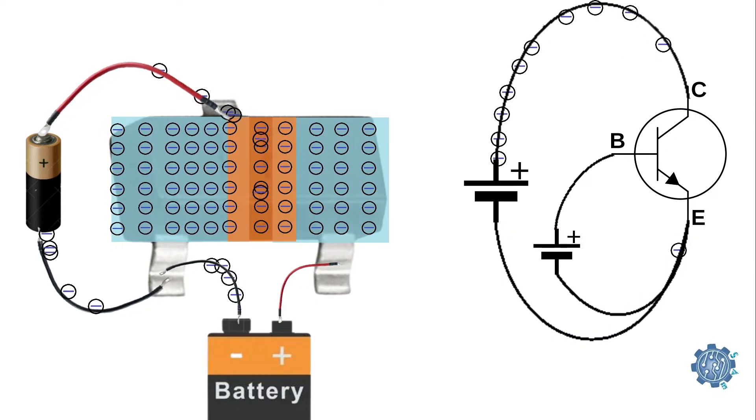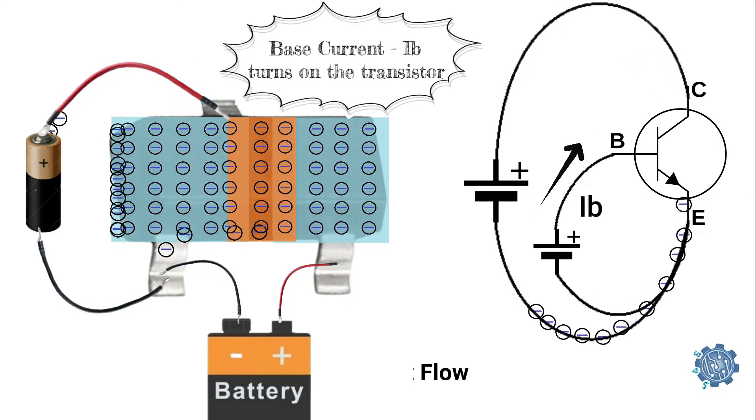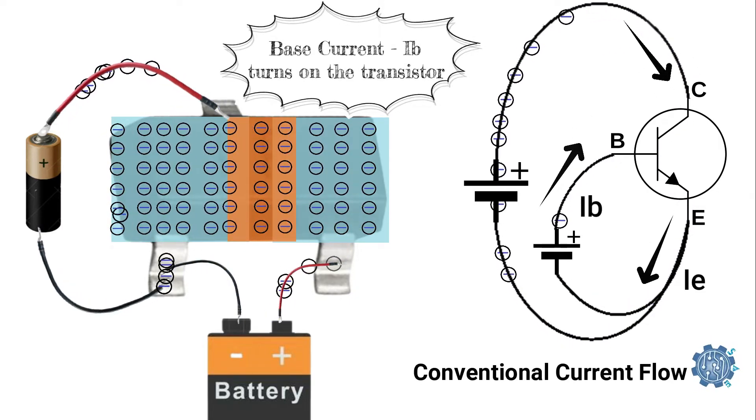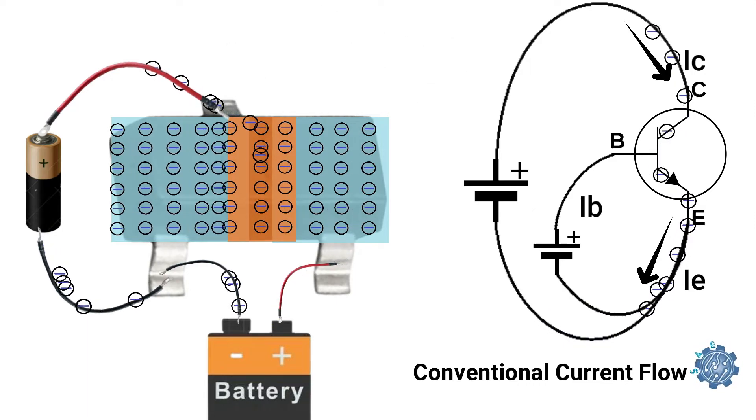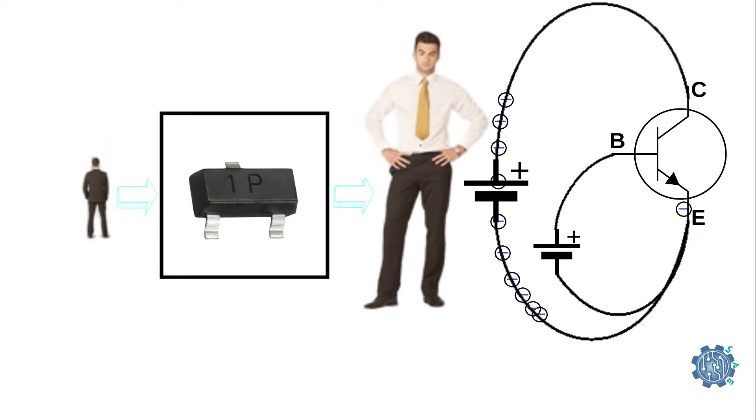Basically, the small current that we use to turn on the transistor at the base makes a big current flow between the emitter and the collector. By turning a small input current into a large output current, the transistor acts like an amplifier.